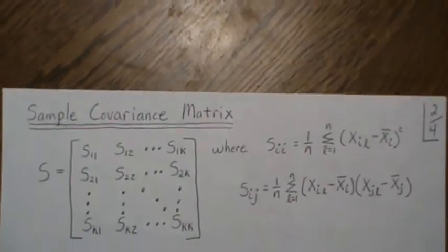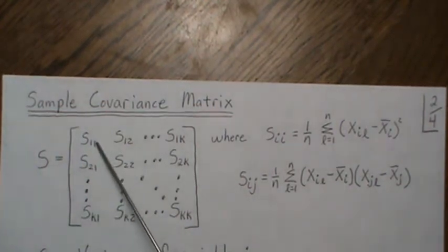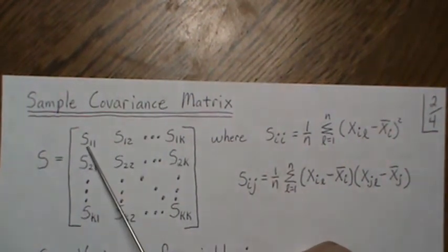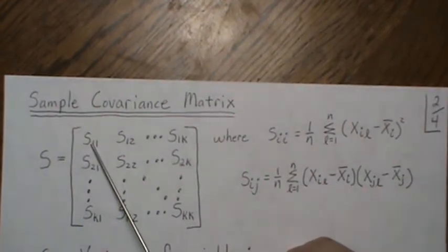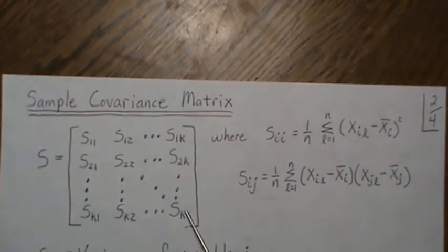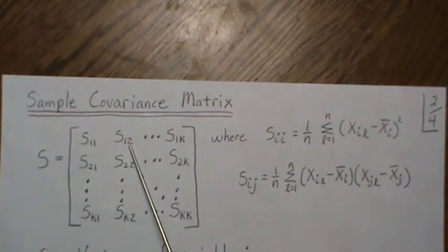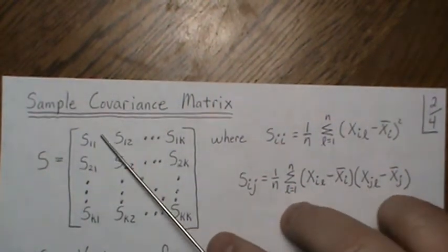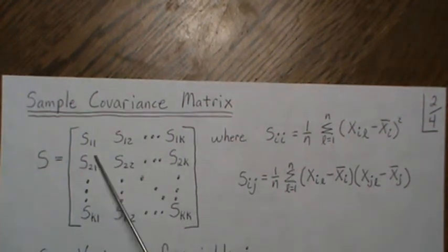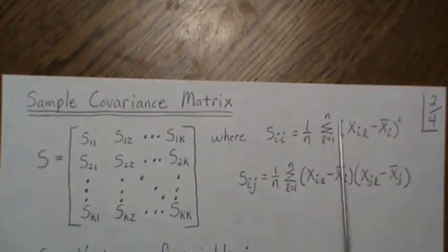Now let's look at the sample covariance matrix. This is a k by k matrix, and the mean vector was k by 1. Each entry is the covariance — so this is the covariance of variable 1 with itself, which is the variance. So we have variance of variable 1, variance of variable 2, variance of the kth variable on the diagonal. All the off-diagonal entries are covariances: this is the covariance of variable 1 and variable 2. This is a symmetric matrix. As a reminder, the variance of a variable is: you add up each variable, subtract the mean, square it, sum it, divide by n.